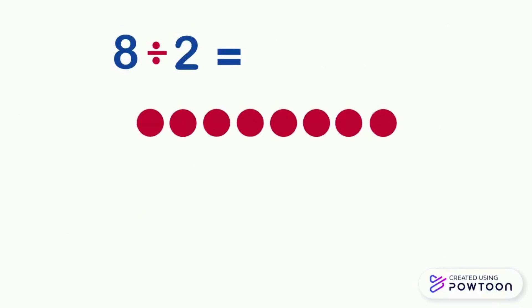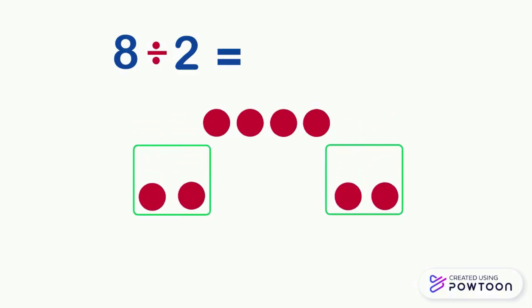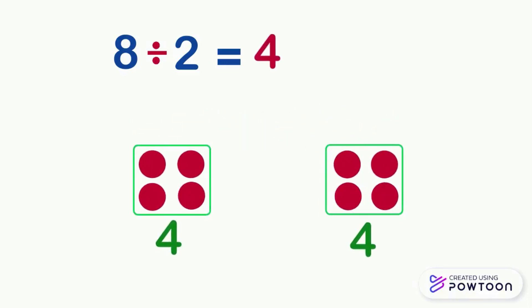Now what does 8 divided by 2 equal? This means that we want to share equally 8 pawns into 2 groups, so we will get 4 pawns in each group. So 8 divided by 2 equals 4. Dividing a number by 2 is the same as finding the half of that number. The half of 8 is 4. 8 divided by 2 equals 4.